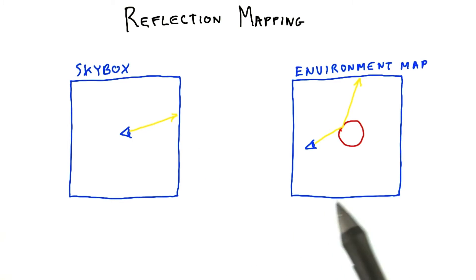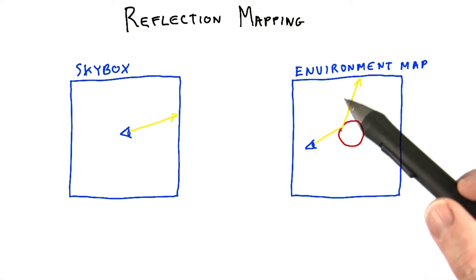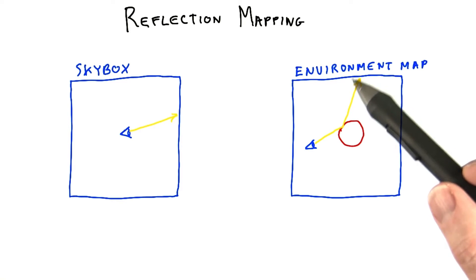An environment map is exactly the same, only for reflected rays. What is the color of the environment map in the reflected direction?